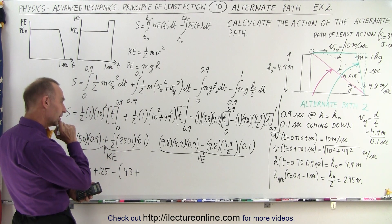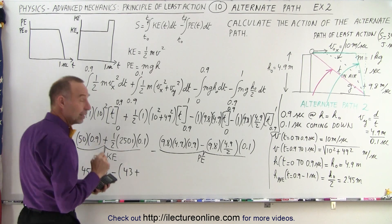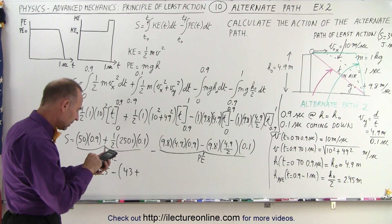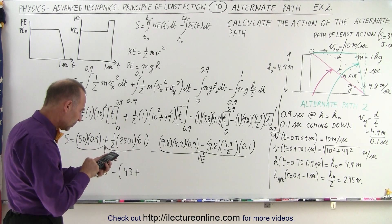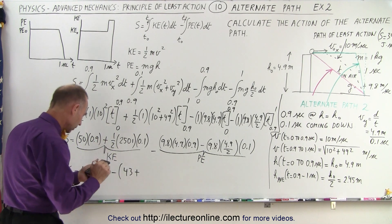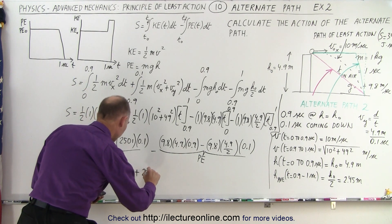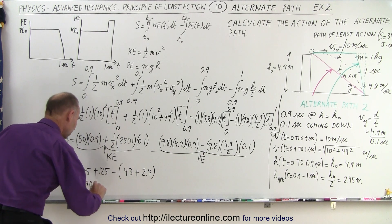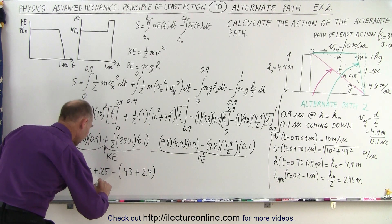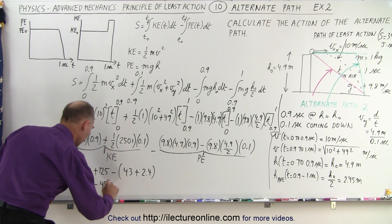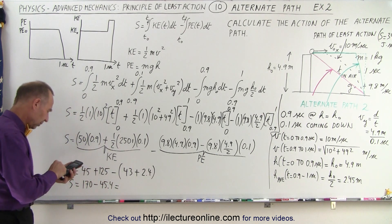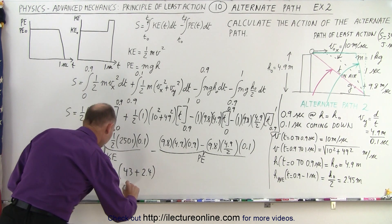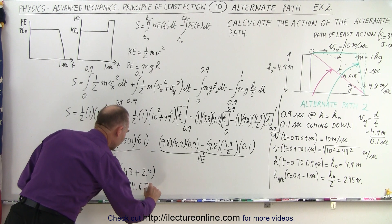Hmm, that's kind of interesting. I wouldn't expect that to be that big. So let me try that again, make sure I got that right. So we have 9.8 times 4.9 divided by 2 times 0.1, there we go, 2.4. And so S equals 170 for the kinetic energy portion minus 45.4, which is equal to 170 minus 45.4 equals 124.6 joules times seconds.